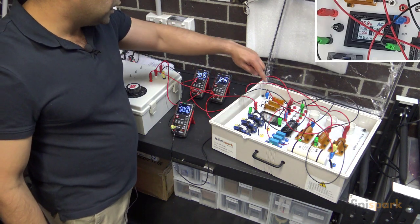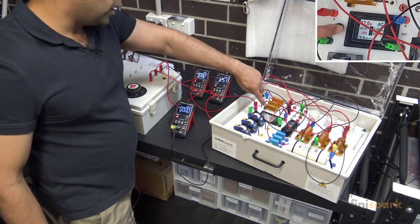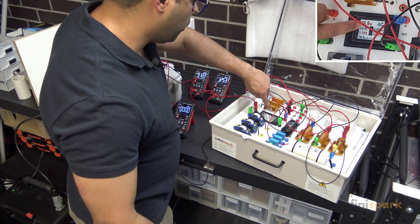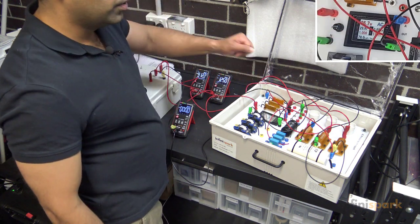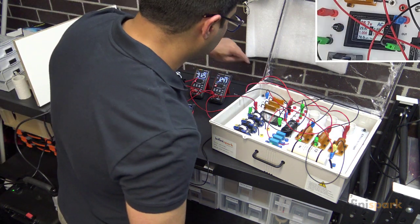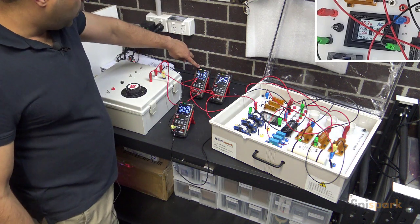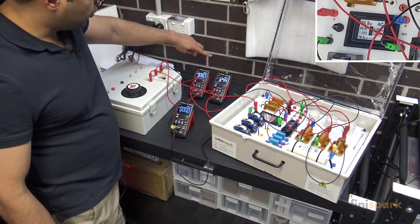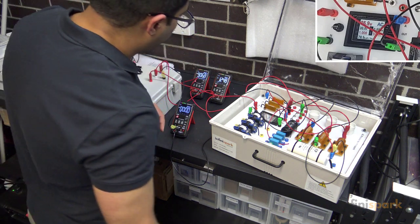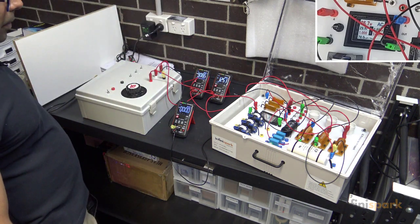In line one we have about 0.89 amps or 890 milliamps. Line two is around 910 milliamps, and line three has dropped to 1.25 amps.